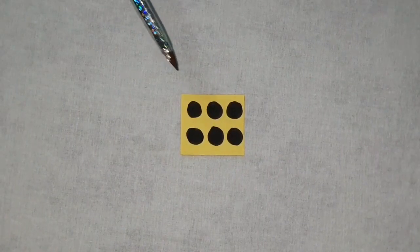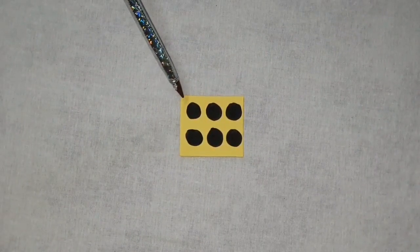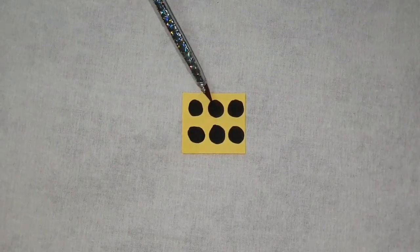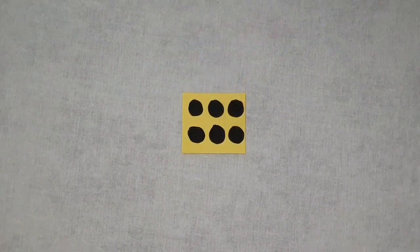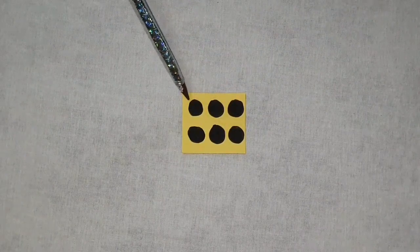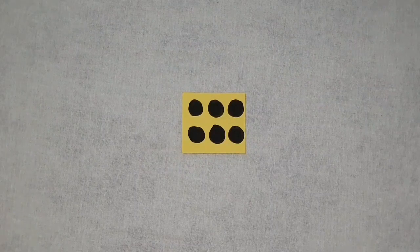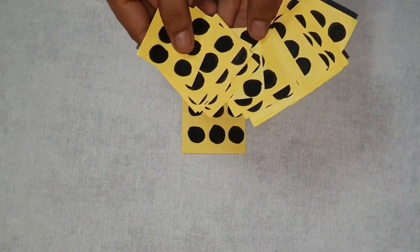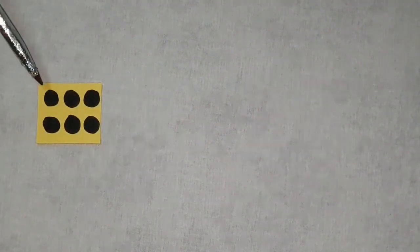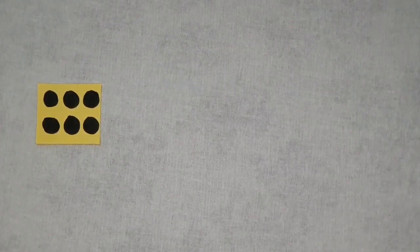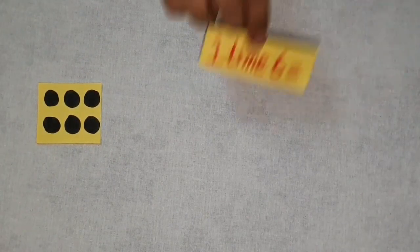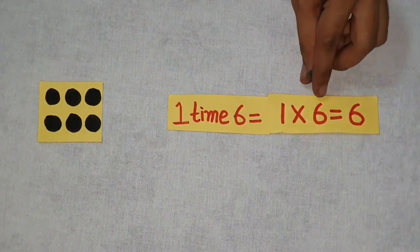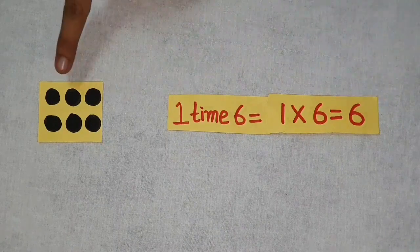There are some dots on this card. Let's see how many dots there are: 1, 2, 3, 4, 5, 6 — 6 dots on this card. I have more cards; all cards have 6 dots. There is one group of 6 dots. 1 time 6 is equal to 1 into 6 is equal to 6 dots.